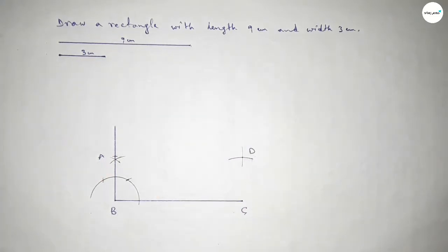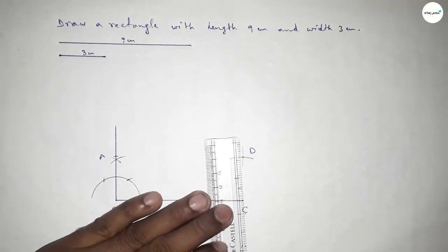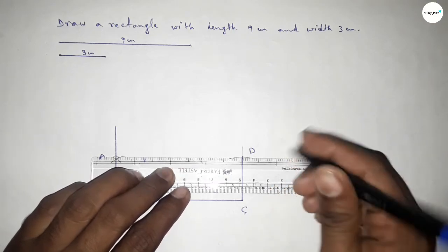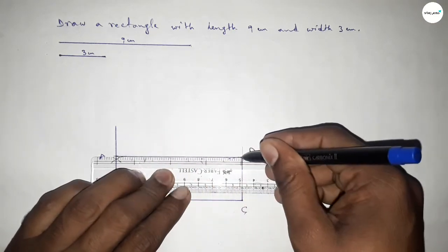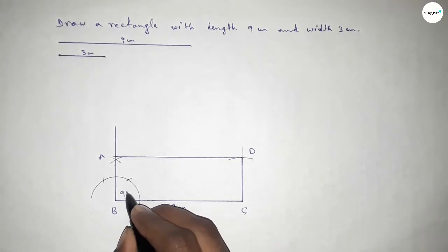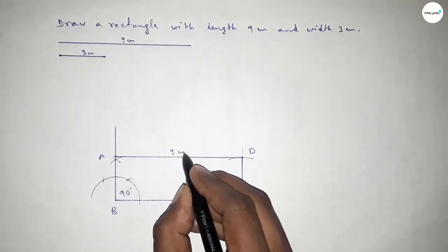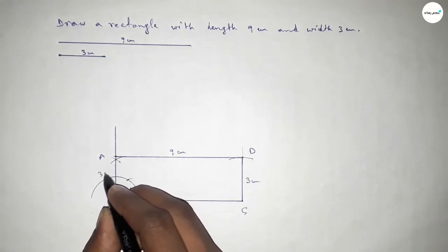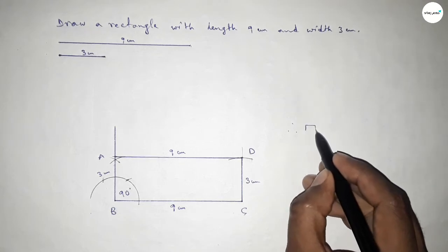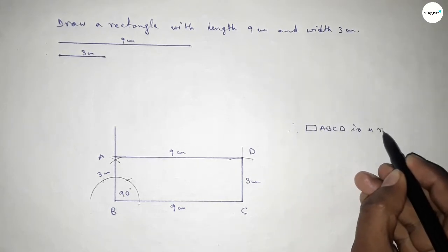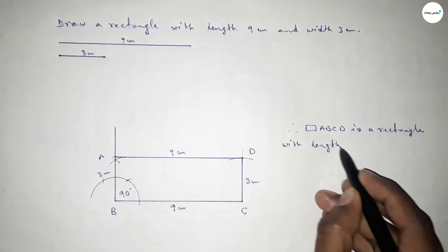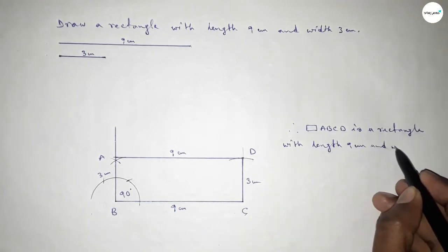Both curves intersect at point D. First joining C and D, then joining A and D to get rectangle ABCD. This side is 9 centimeters, this angle is 90 degrees, this side is 9 centimeters, this side is 3 centimeters, and this side is also 3 centimeters. Therefore, rectangle ABCD is a rectangle with length 9 centimeters and breadth or width 3 centimeters.